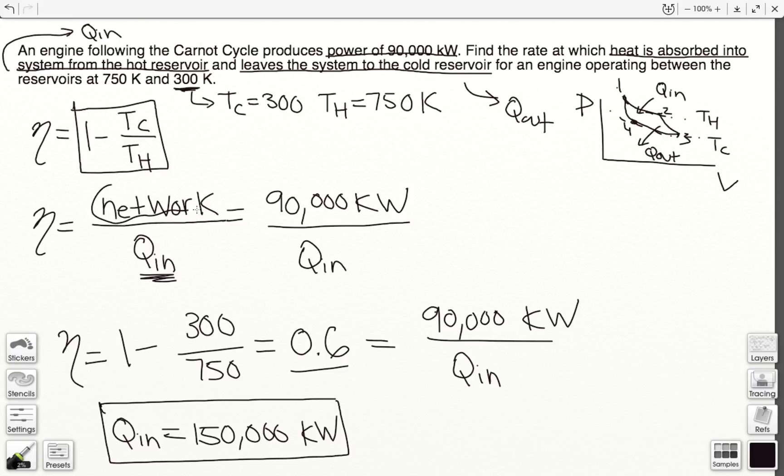remember that was equal to work from 1 to 2, plus work from 2 to 3, plus work from 3 to 4, plus work from 4 to 1, all over our Q_in.